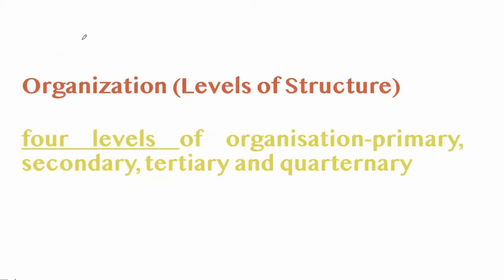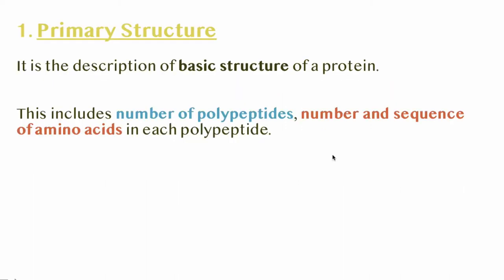Biologists study protein structure up to four levels of organization: primary, secondary, tertiary, and quaternary. The primary structure is simply the arrangement of amino acids in a polypeptide chain. It includes the number and sequence of amino acids in each polypeptide.